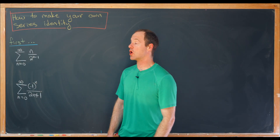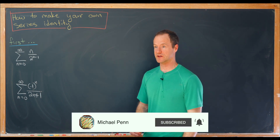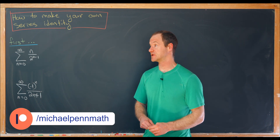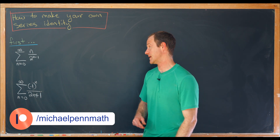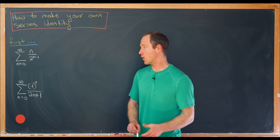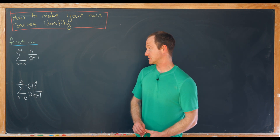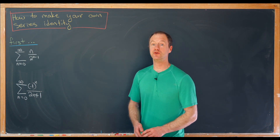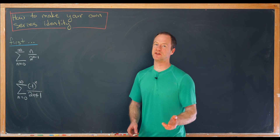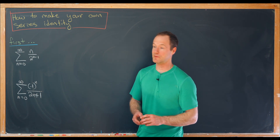Today I want to show you how to make your own series identity by manipulating some well-known series. These two well-known series come from examples from my Calculus 2 class. The first is the sum as n goes from 0 to infinity of n over 2 to the n minus 1, and the second is the sum as n goes from 0 to infinity of minus 1 to the n over 2 times n plus 1. We derived closed forms for these in class using an exploratory method.